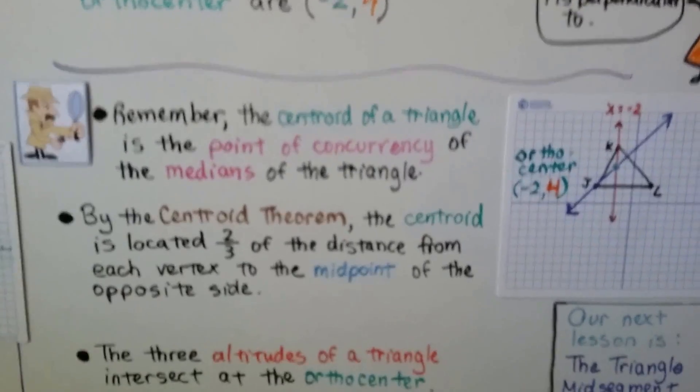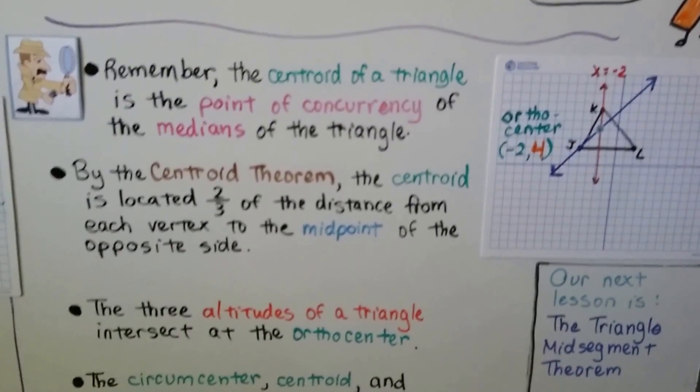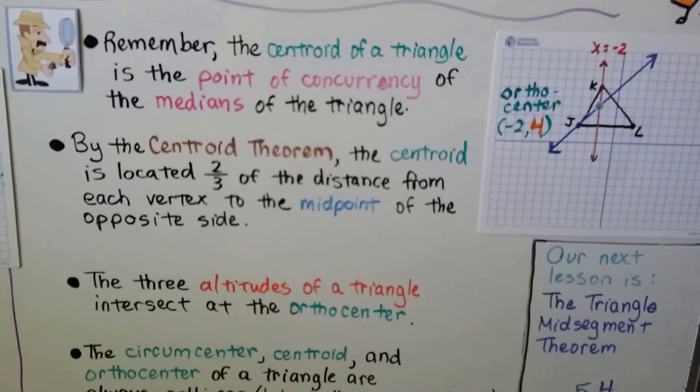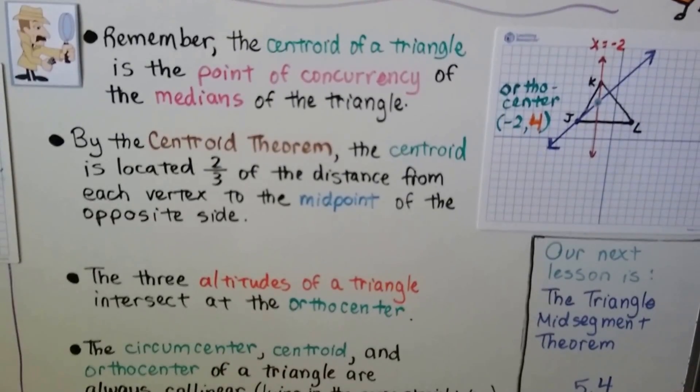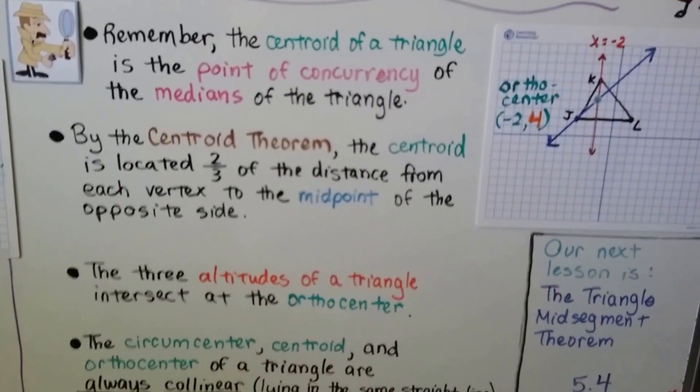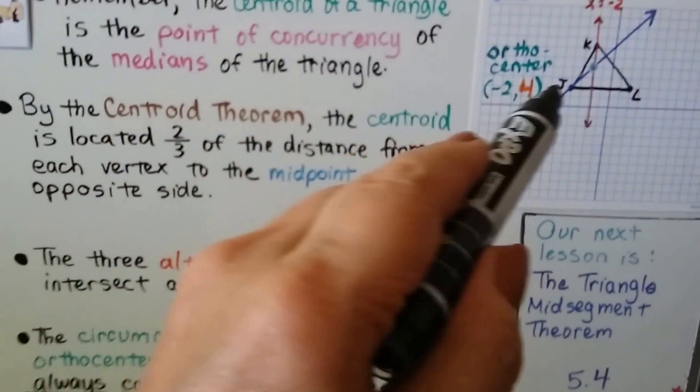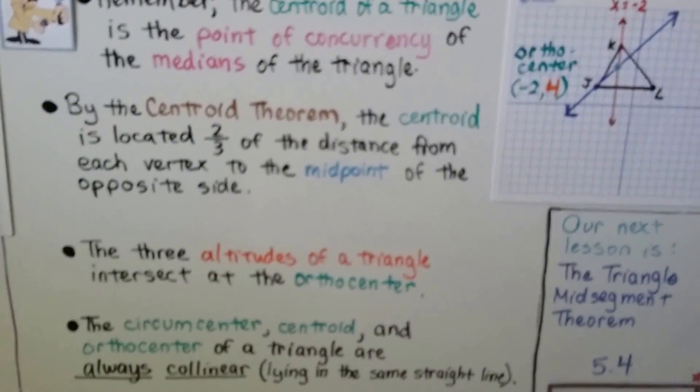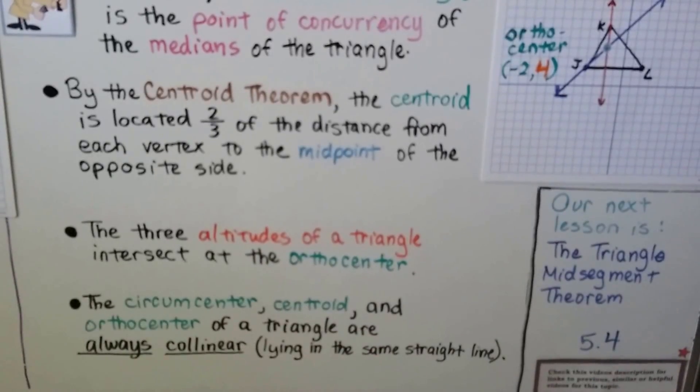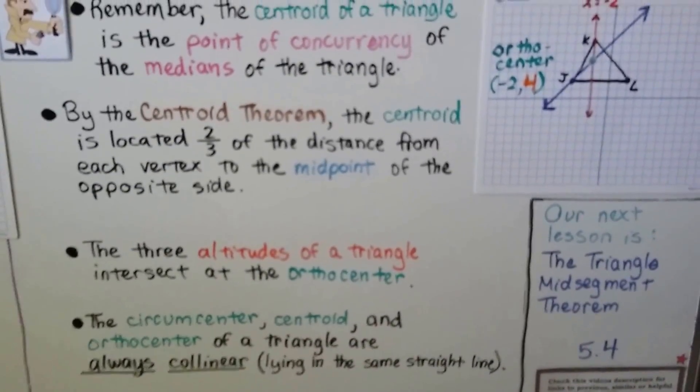So remember the centroid of a triangle is the point of concurrency of the medians of the triangle. And by the centroid theorem, the centroid is located two-thirds of the distance from each vertex to the midpoint of the opposite side. We talked about that in the last video. And the three altitudes of a triangle intersect at the orthocenter. And the circumcenter, centroid, and orthocenter of a triangle are always collinear. That means they're lying in the same straight line.